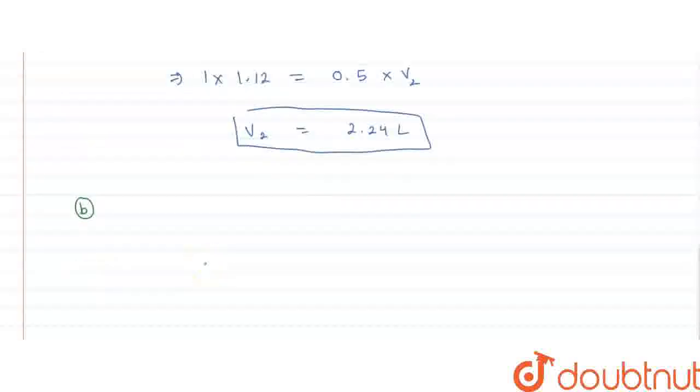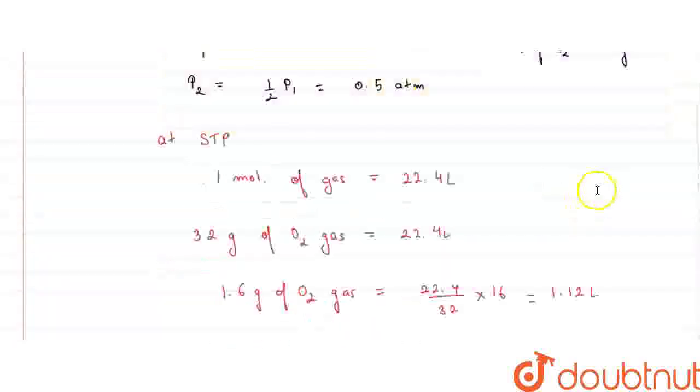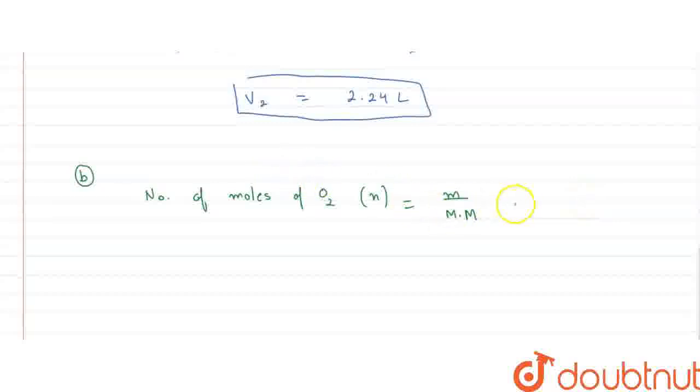So, in order to calculate the number of molecules, we will first have to calculate the number of moles. Number of moles of O2, which we denote by small n. We know that the formula to calculate the number of moles is given mass by the molecular mass. So, the given mass is 1.6. We will get 1.6 upon the molecular mass, which is 32. From here, we get the number of moles of O2 to be equal to 0.05.